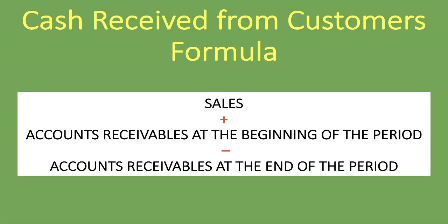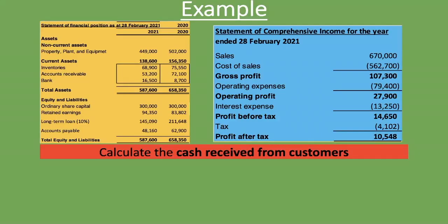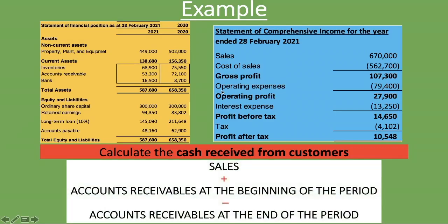Let's go through an example. We're given the statement of financial position as at 28 February 2021 and the comparative year 2020, as well as the statement of comprehensive income for the year ended 2021. Our formula is: sales plus accounts receivable at the beginning of the period minus accounts receivable at the end of the period. The sales amount from the statement of comprehensive income is 670,000 rand.